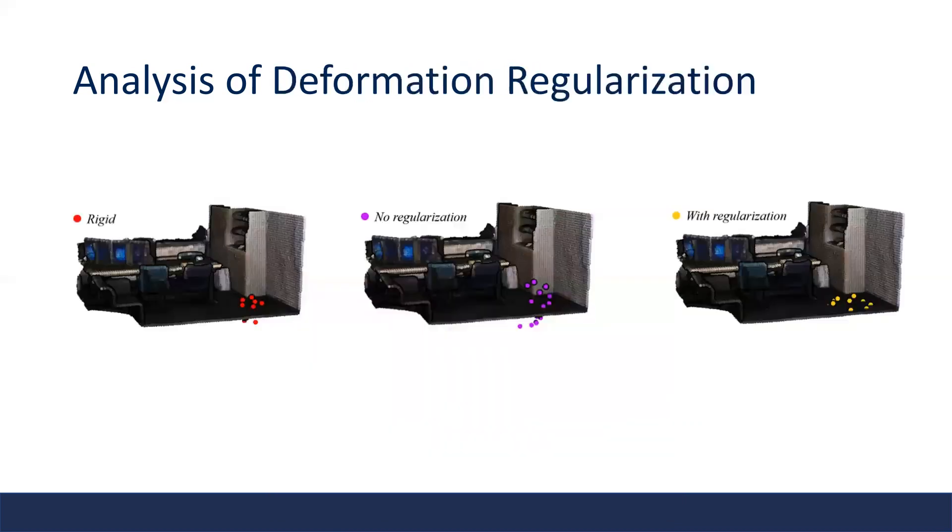Here we show how the proposed regularization terms help learn meaningful local offsets in deformable KPConv. Directly optimizing the local offsets without regularization tends to make the kernel points more scattered over the 3D space, while adding the proposed regularization terms helps to align them well with the local geometry.